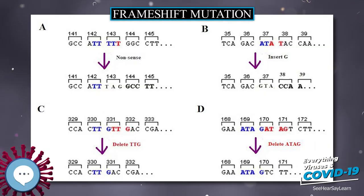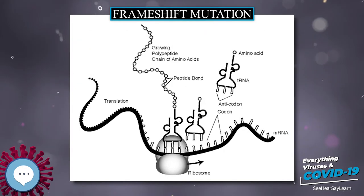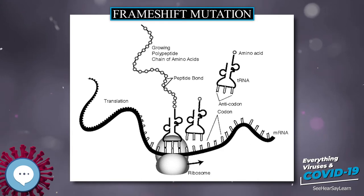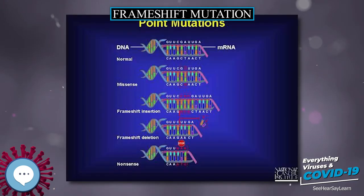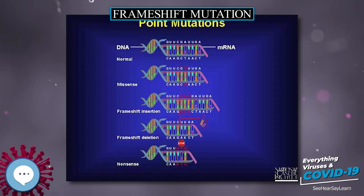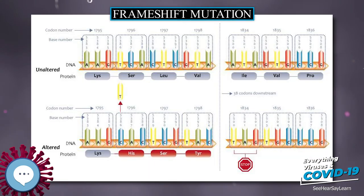A frameshift mutation, also called a framing error or reading frame shift, is a genetic mutation caused by indels — insertions or deletions — of a number of nucleotides in a DNA sequence that is not divisible by three. Due to the triplet nature of gene expression by codons, the insertion or deletion can change the reading frame.